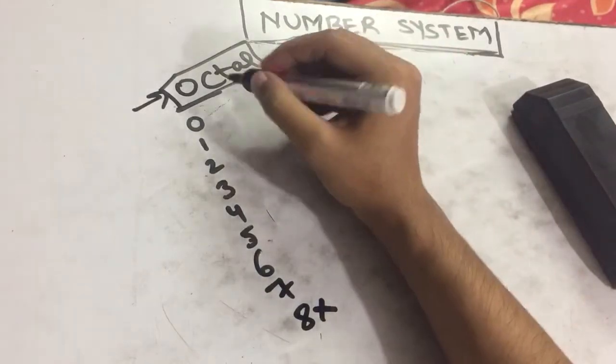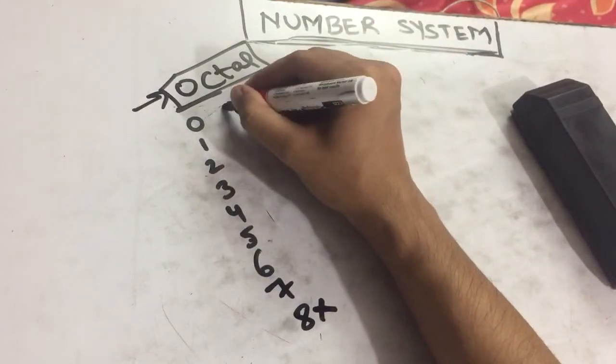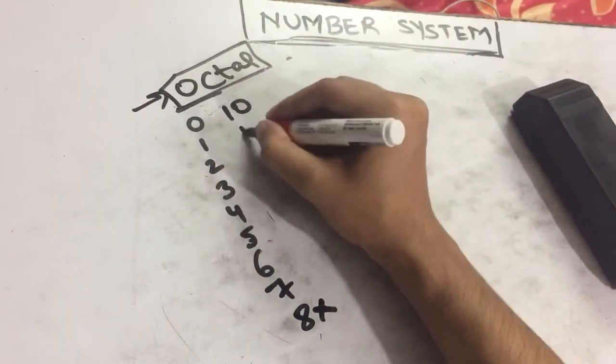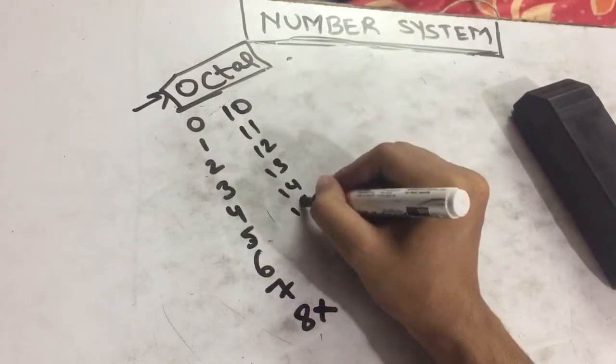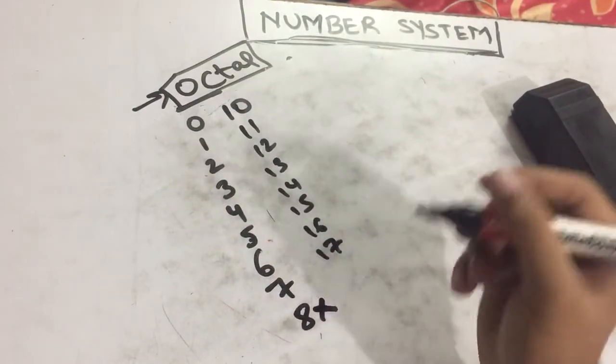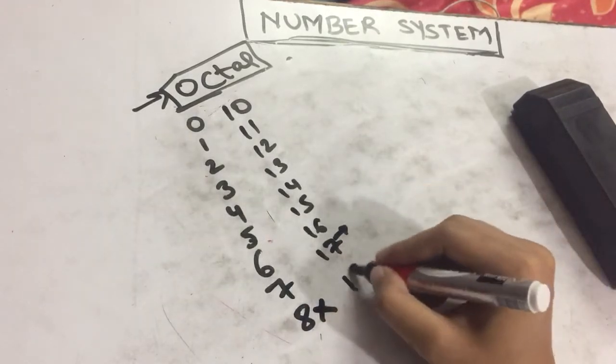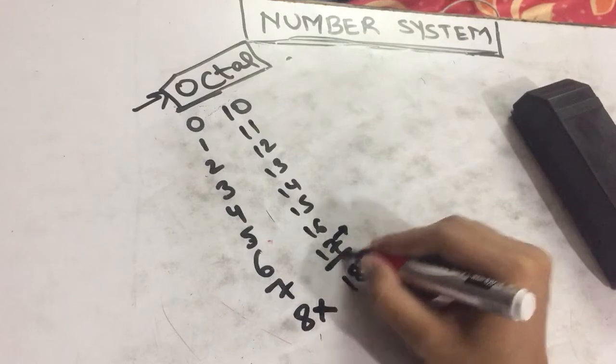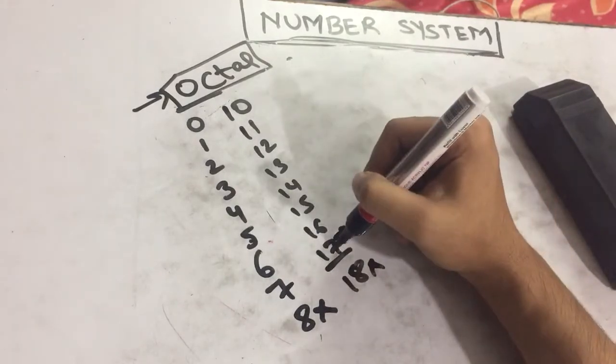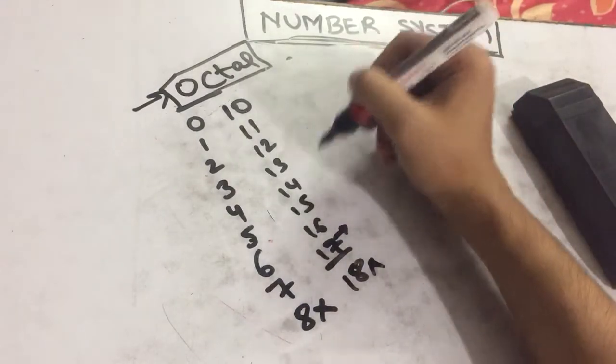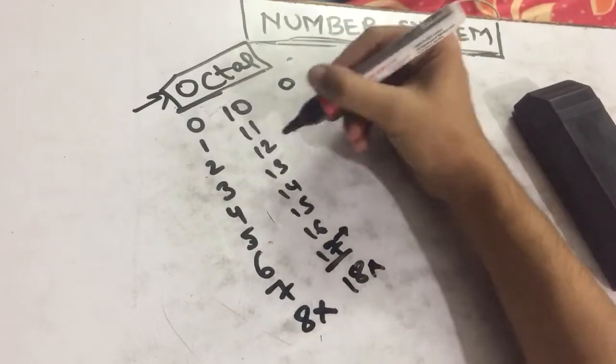We'll move to the next row, then it will be 10, 11, 12, 13, 14, 15, 16, 17. Again, 7 is the maximum number so we can't write 18. After 17, after 7, the next number is 0 with 1 carry.